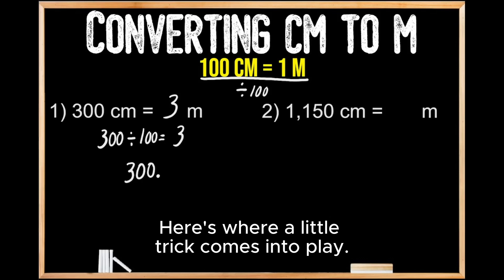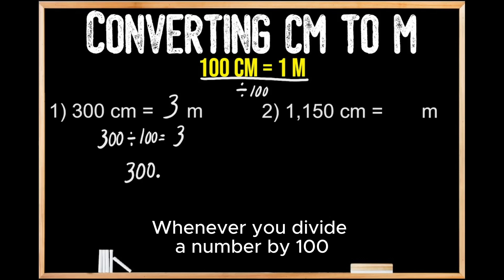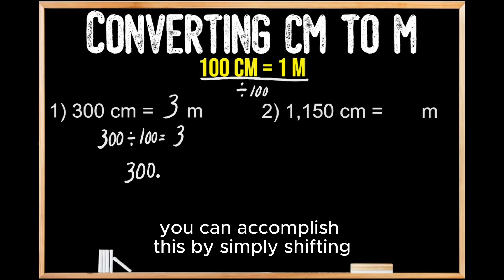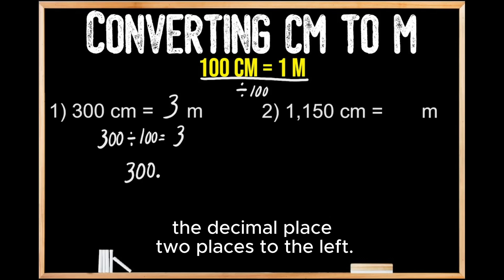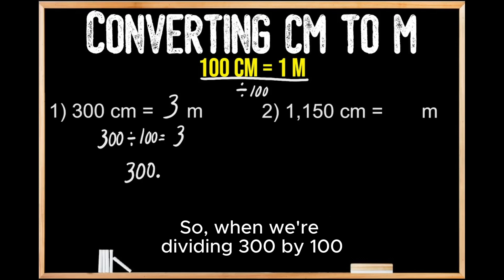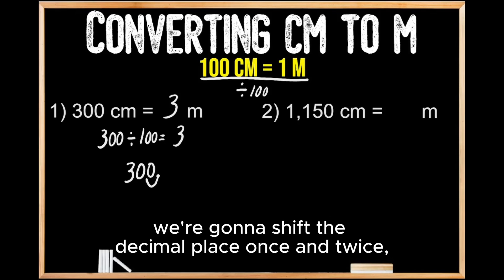Here's where our little trick comes into play. Whenever you divide a number by 100, you can accomplish this by simply shifting the decimal place two places to the left. So when we're dividing 300 by 100, we're going to shift the decimal place once and twice.